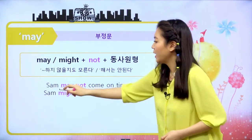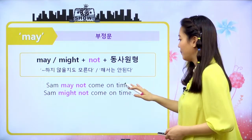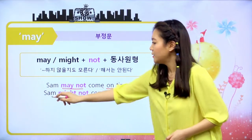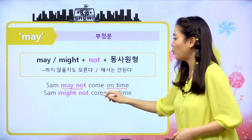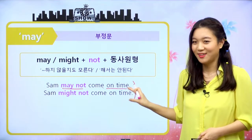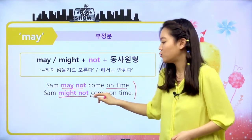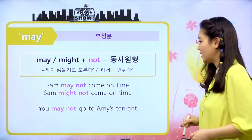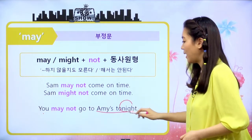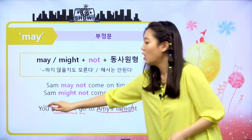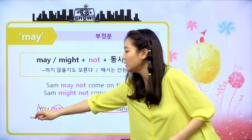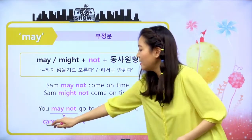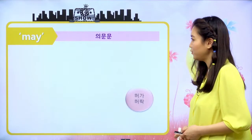'You may not go to Amy's tonight' — 너는 오늘 밤 Amy의 집에 가면 안 돼. 즉 허락을 하지 않는 may가 되겠죠. 이 문장을 'You cannot go to Amy's tonight'으로도 바꿀 수 있어요. 그래서 cannot 혹은 can't로 may not을 바꿀 수 있다는 거 기억해주세요.